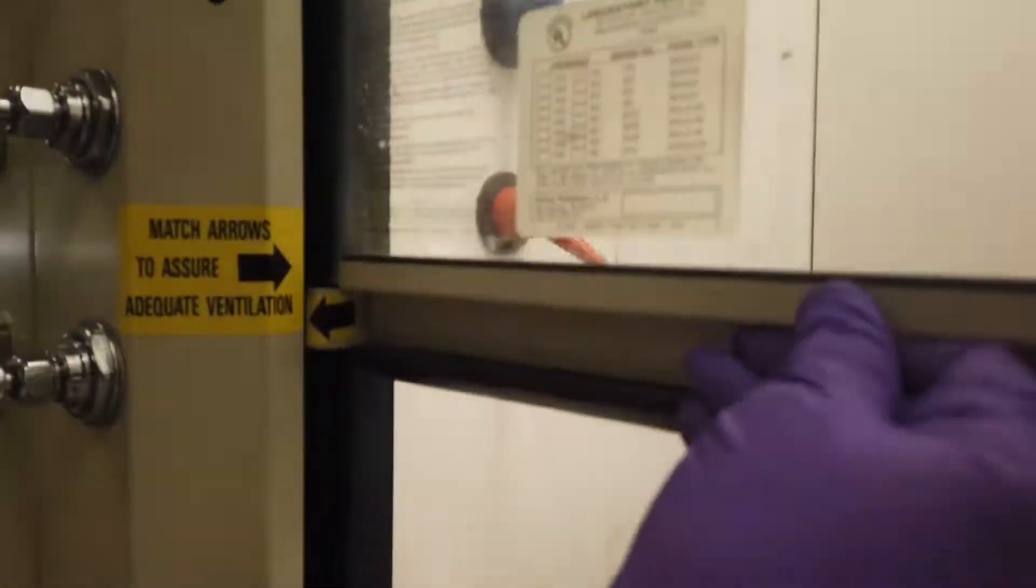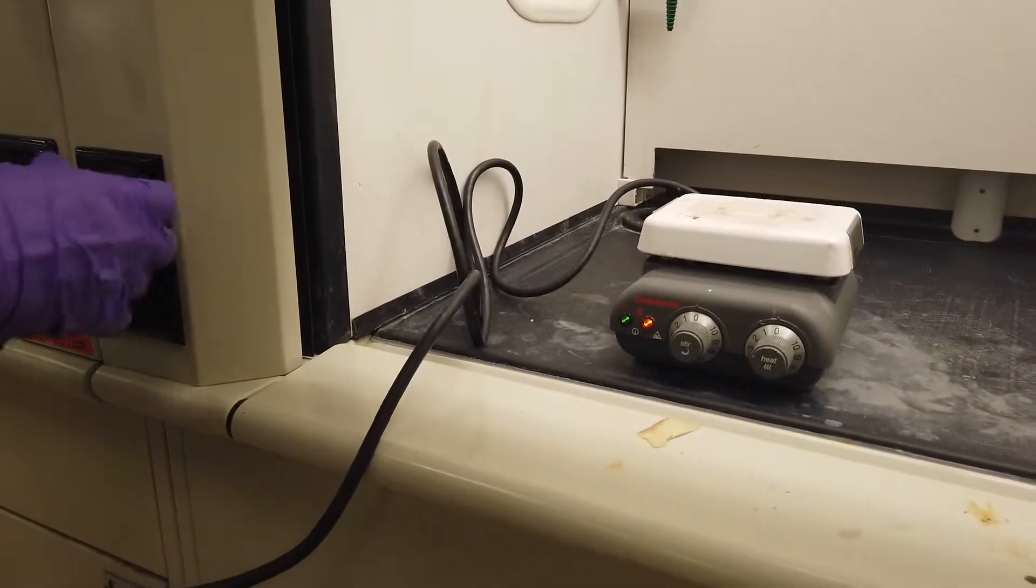Then, get your fume hood prepared by turning on the lights, raising the sash, and plugging in your hot plate.